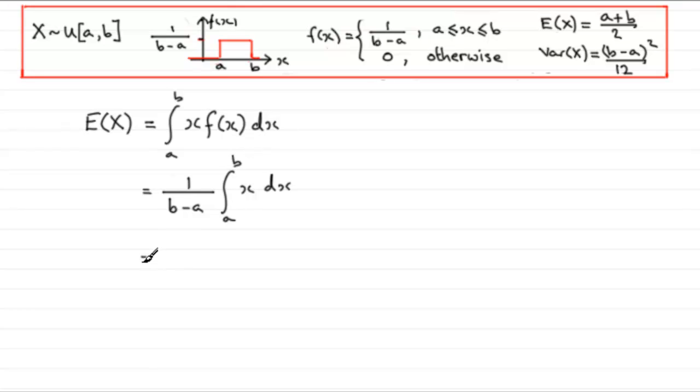And if we integrate that, we'll put the constant down 1/(b-a), but integrating x in the usual way we would get x²/2. And that's going then between the limits a and b.